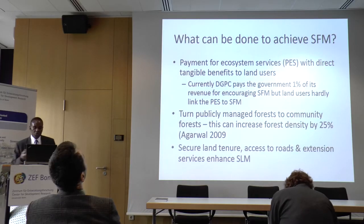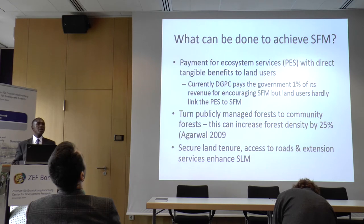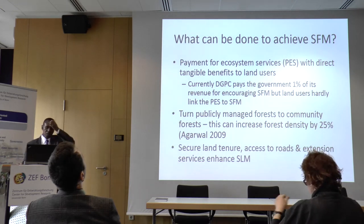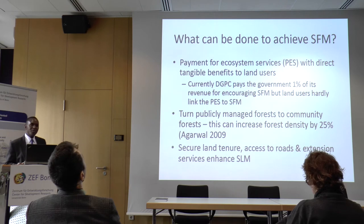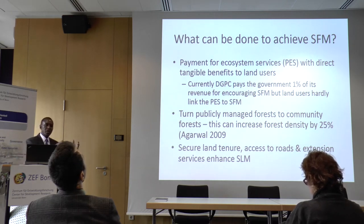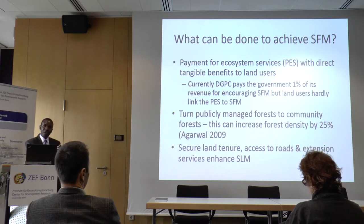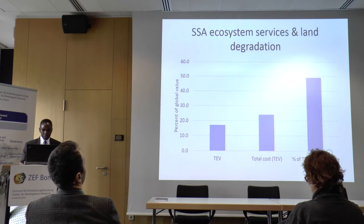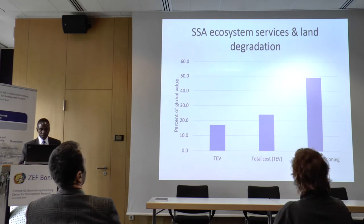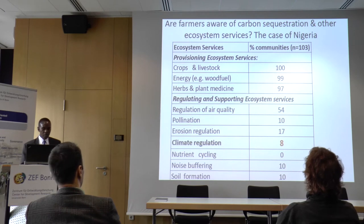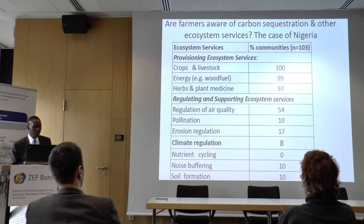Bhutan is already doing payments for ecosystem services, but doing it incorrectly — the hydroelectric plants pay the government, and the government provides extension services to farmers. There is no direct connection between the power plants and the farmers implementing sustainable practices. Our recommendation is that money should go directly to the farmers. Turning to Sub-Saharan Africa: the region accounts for about 17% of the global cost of land degradation, but 24% of total economic value.